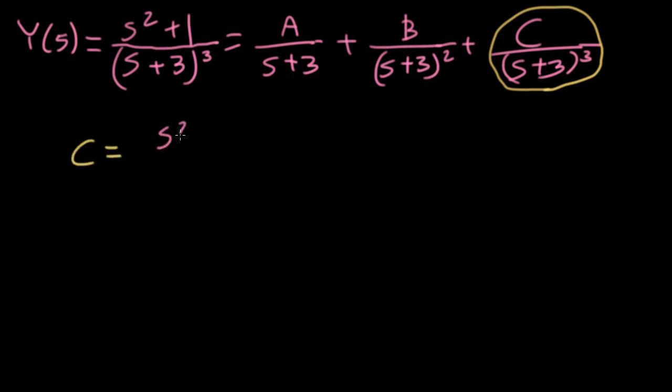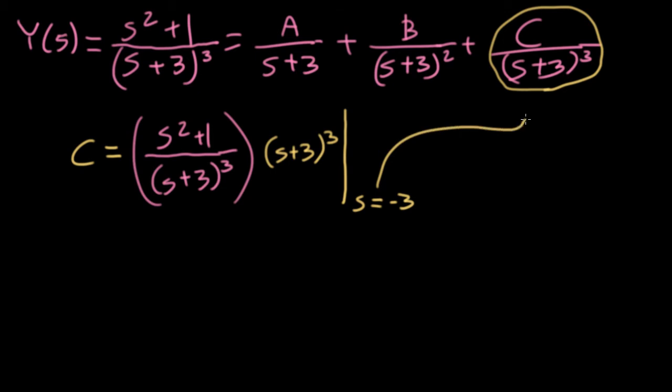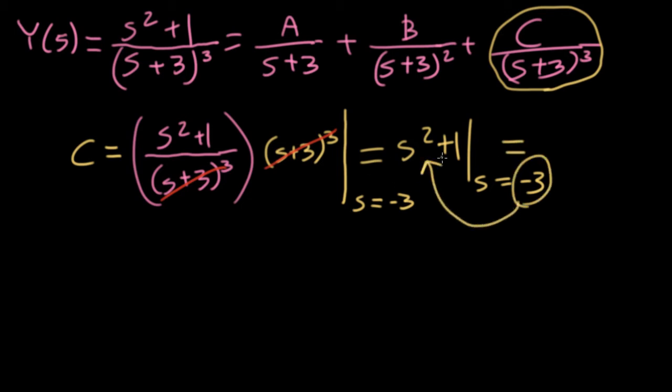So here we're taking the raw form that we're expanding, and what we want to do is multiply this by this denominator, including that cubed. We just want to get rid of it all together. So I'm going to multiply by s plus three cubed, and now what we're going to do is we're going to evaluate this at s equals minus three, which is the root of this denominator. So the residue method is handling this higher power just the same way it did in the unique root case. These cancel, and so I'm left with s squared plus one, and I'm going to plug in s equals minus three. If I plug minus three in for s, minus three squared would give me nine, so this gives me ten. So c equals ten.